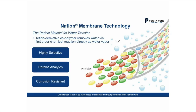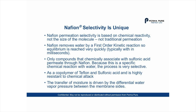All of these humidifiers are based on Nafion membrane technology. Nafion is the perfect material for water transfer — it is a Teflon derivative copolymer that removes or adds water via a first-order chemical reaction directly as water vapor. Nafion's permeation selectivity is based on chemical reactivity, not the size of the molecule, so it is not traditional permeation.